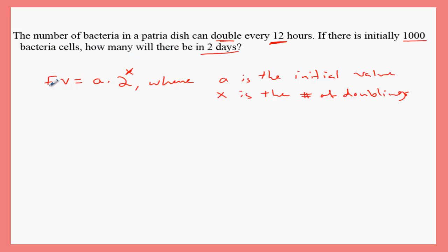Let's go back to the question. You need to find how many will there be, so we're looking for the future value. The future value equals the initial value is 1000 - you need to memorize this formula by the way, it's not going to be on the reference sheet or anything - times 2 to the power of x.